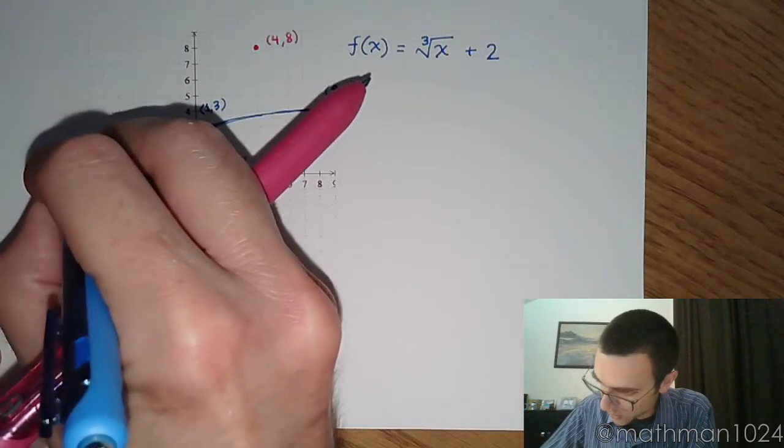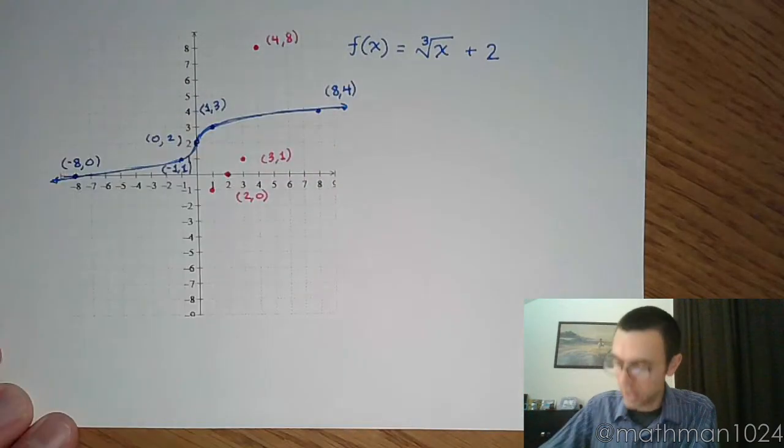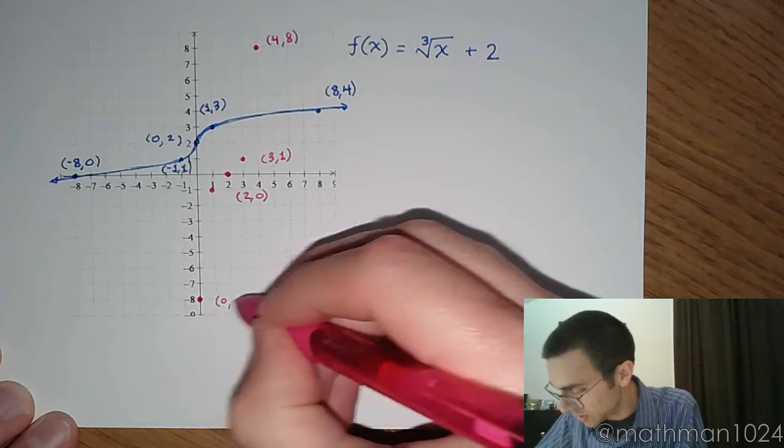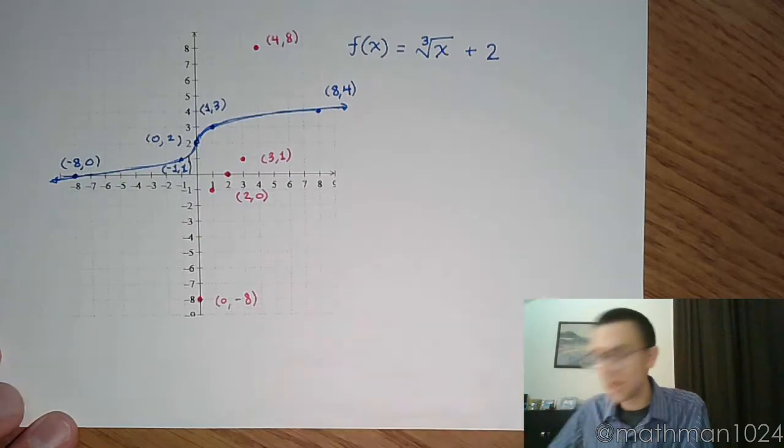And finally, over here, this is the ordered pair (-8, 0). So we should have (0, -8). Down here, (0, -8).